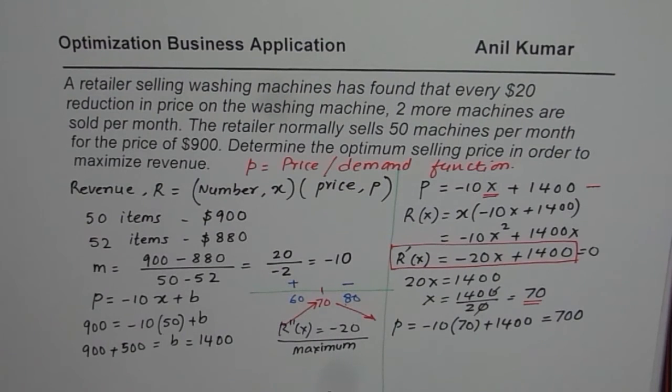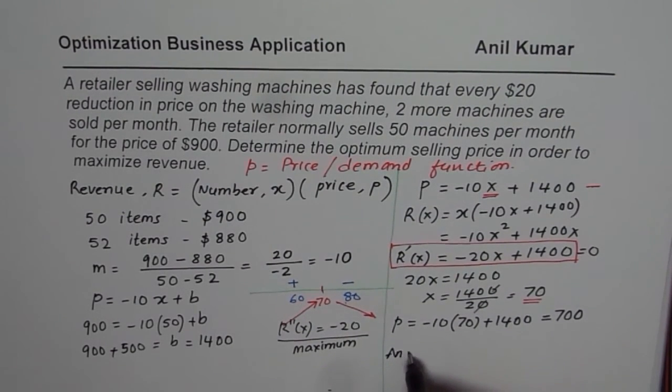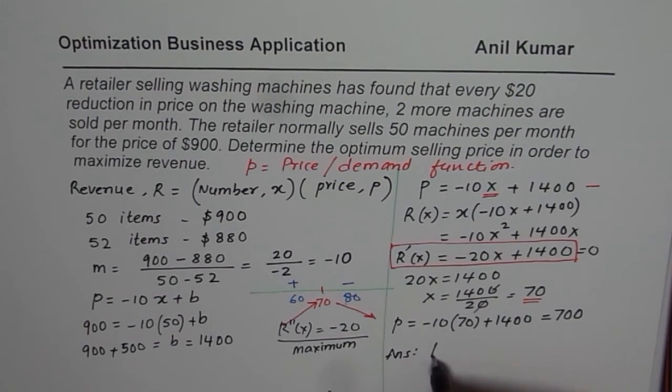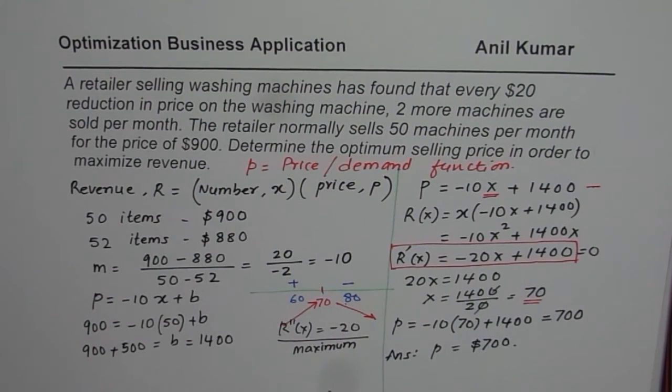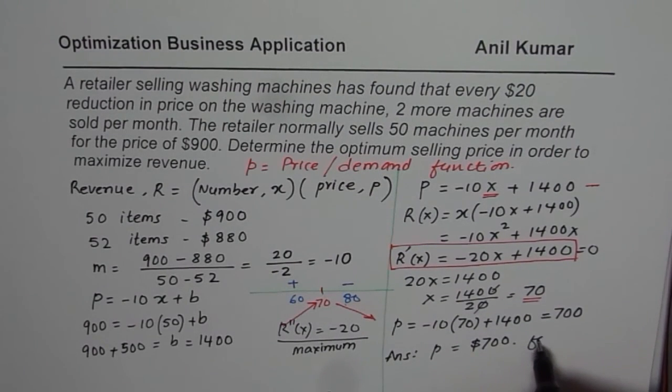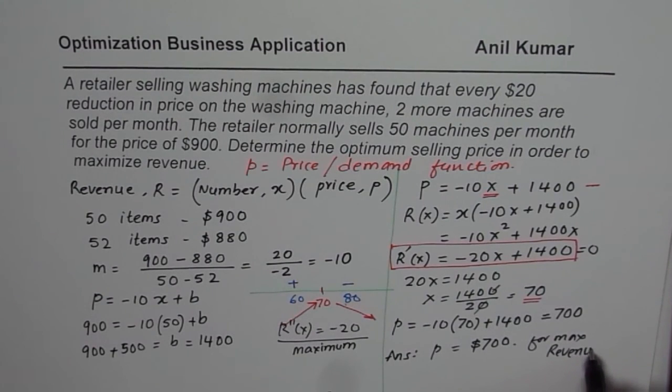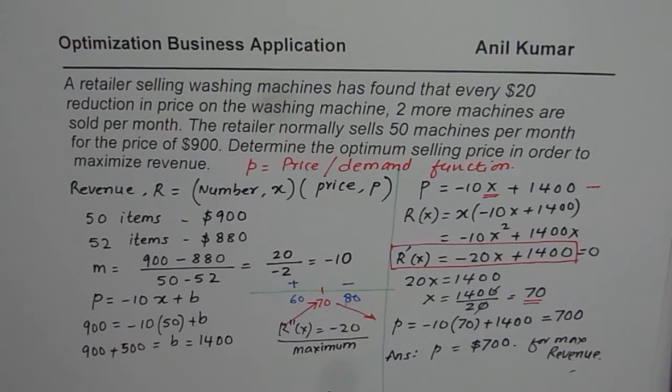That is how we get the price and therefore we can now write down our answer, that is price P per item is $700. That is how we can find the selling price for maximum revenue. I hope this video helps you to understand how price or demand function, number of items and revenue are related and how we can maximize revenue. Thank you and all the best.